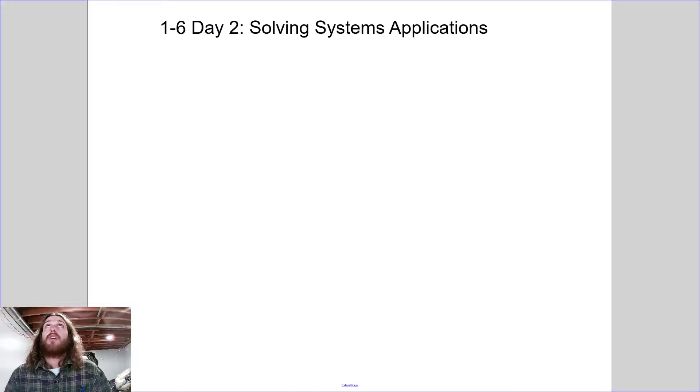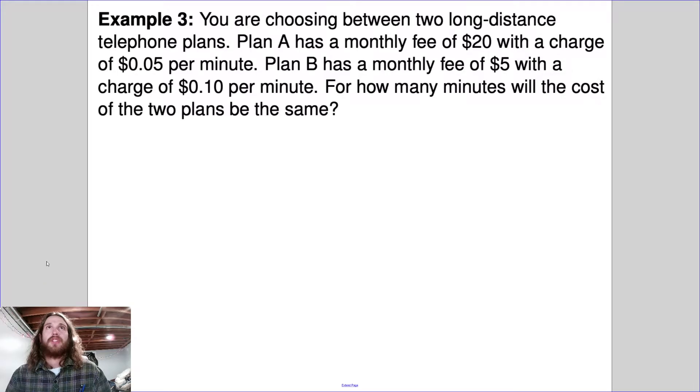When you're solving system of equation application questions there's typically a series of steps that you go through in each problem. So we're gonna look through this one, we're gonna read it really quick and then we're gonna run through those steps. You're choosing between two long distance telephone plans. Plan A has a monthly fee of $20 with a charge of five cents per minute and plan B has a monthly fee of five dollars with a charge of ten cents per minute. For how many minutes will the cost of the two plans be the same?